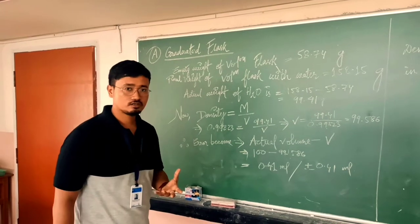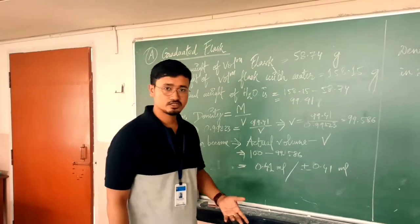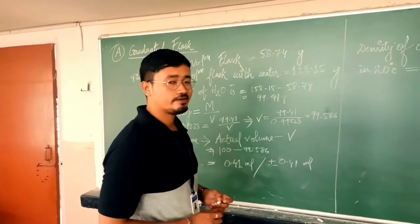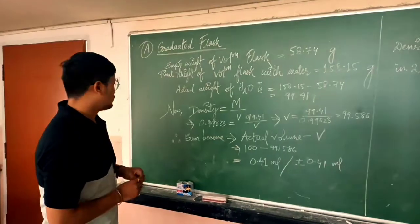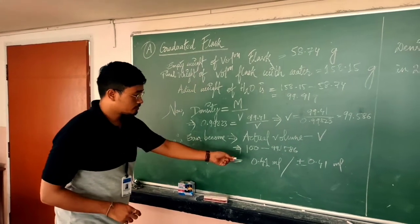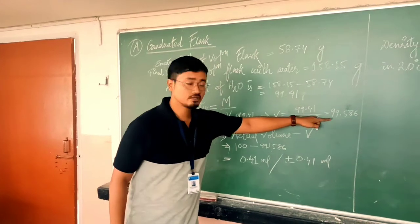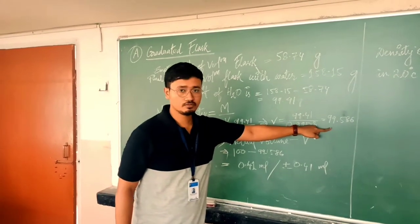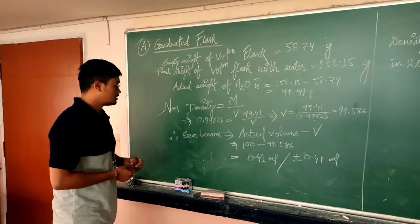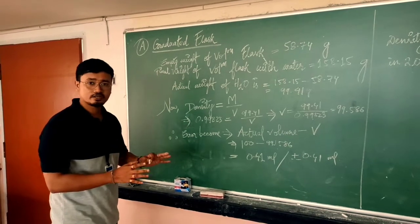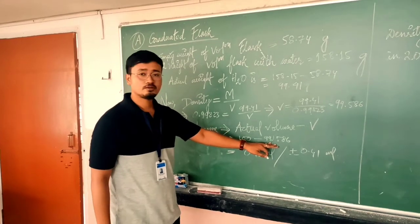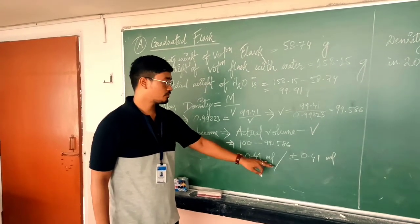The temperature of water at the time of the experiment was 20 degrees Celsius. At that particular temperature the density of water is 0.9983. By putting that value in the formula, we will get the volume, which is 99.586. This is the actual volume of the volumetric flask. The volume written on the volumetric flask was 100 ml, but the actual volume we got is 99.586 ml, so the difference is 0.41 ml.